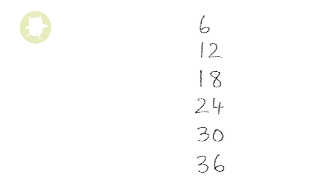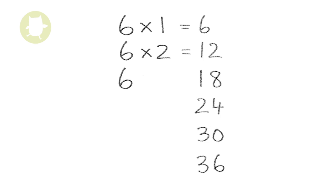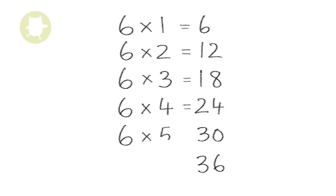The first multiple of 6 is 6. This can be calculated by multiplying 6 by 1. The second multiple of 6 is 12. This can be calculated by multiplying 6 by 2. The next multiple of 6 is 18. This can be calculated by multiplying 6 by 3. The fourth multiple of 6 is 24. The fifth multiple of 6 is 30. This can be calculated by multiplying 6 by 5.